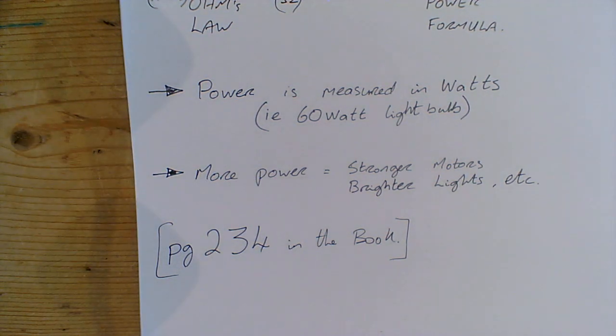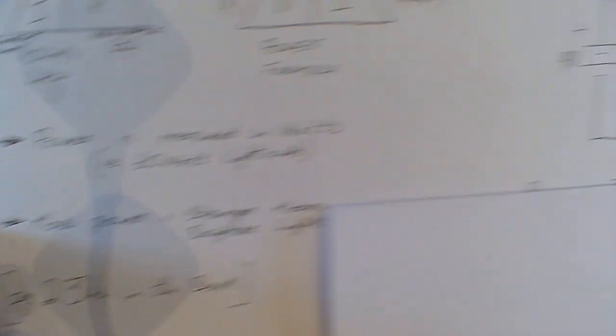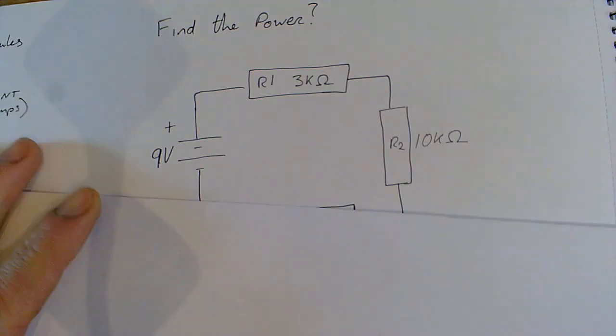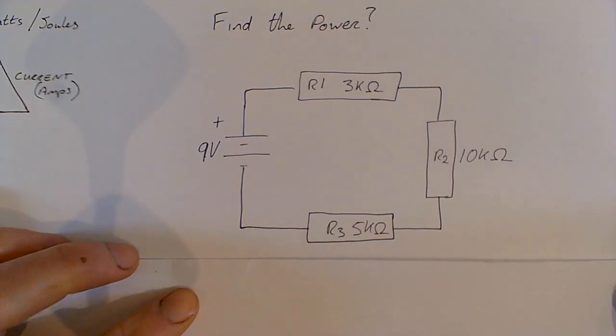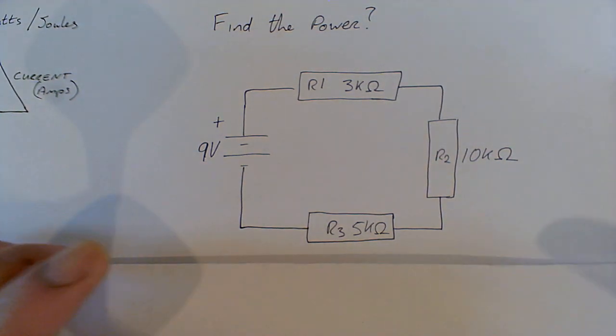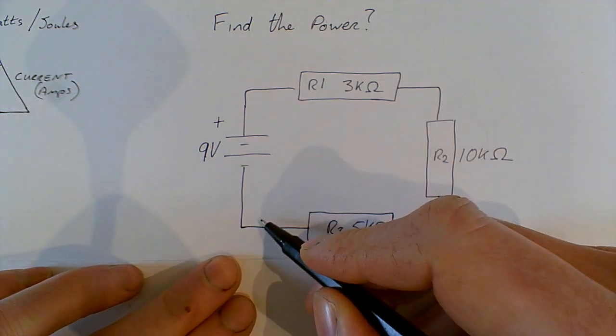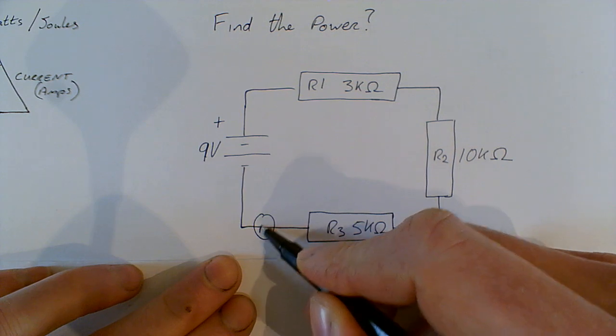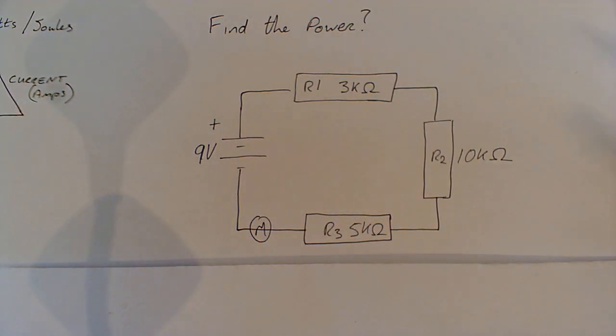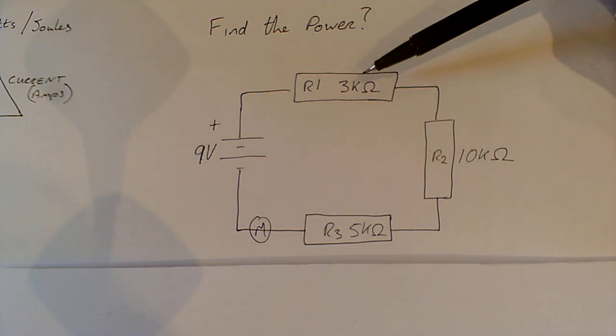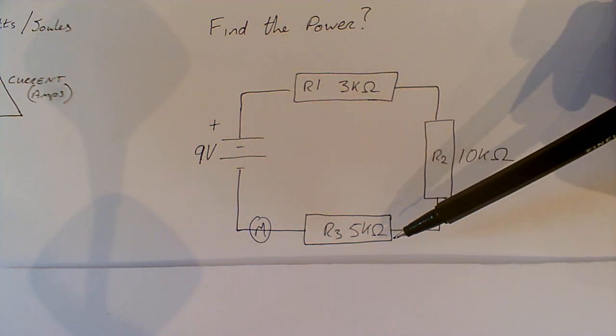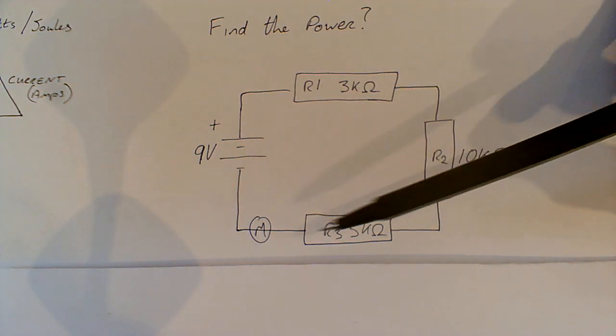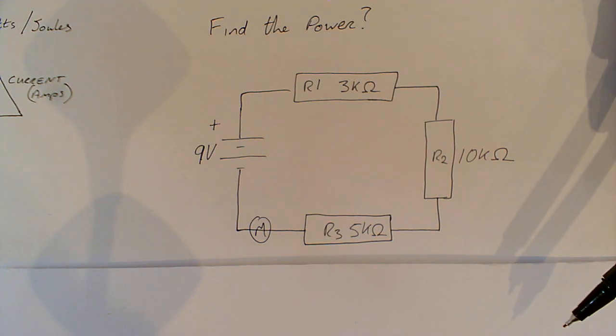Let's start off with a fairly straightforward and simple circuit. The circuit here is on page 234. It's looking to find the power that's in the circuit. If I was to fire a motor at the end of this circuit with a 3,000 ohm resistor, a 10,000 ohm resistor, and a 5,000 ohm resistor already part of the circuit, what sort of power would the motor be getting?